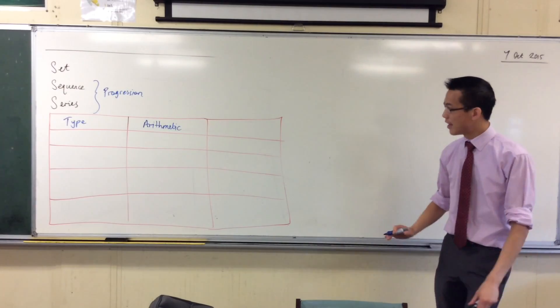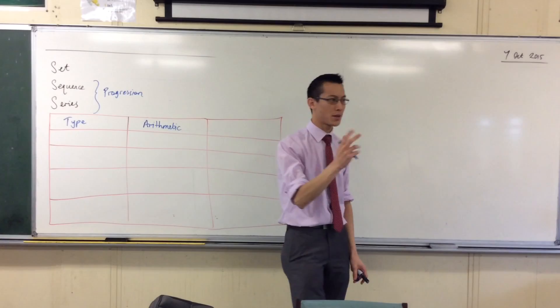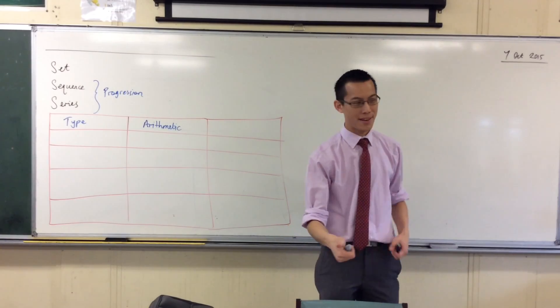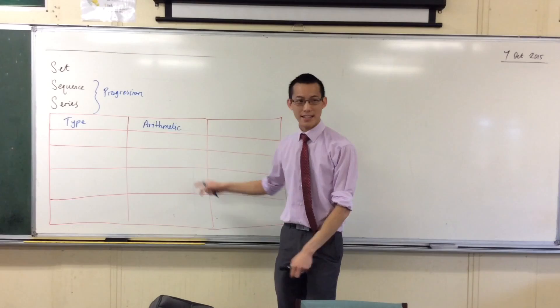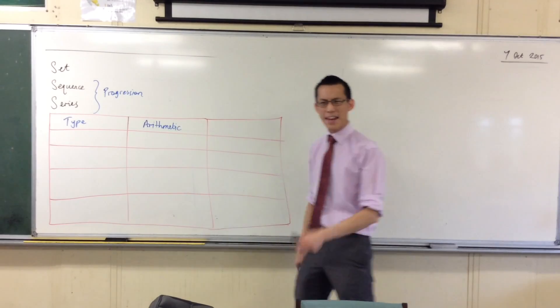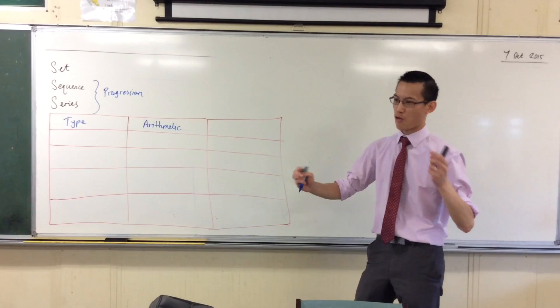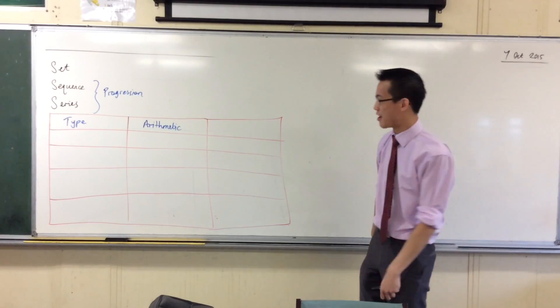Now let me just make a quick note here. This word, the spelling of this word, is two things. It's either an adjective or it's a noun. When it's an adjective, it's arithmetic. That's how I'm using it right now. If it's a noun, it's arithmetic, which is like a field of mathematics, right? Arithmetic.